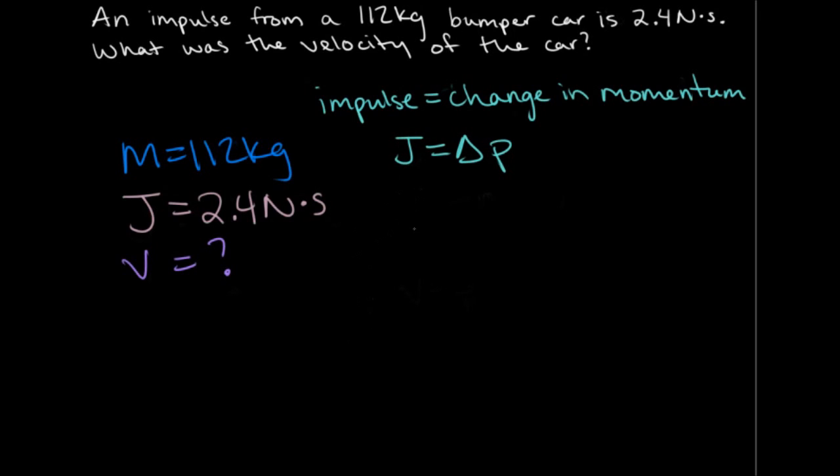And then after that, I'm going to rewrite it as impulse equals mass times velocity, because the change in momentum, or delta P, equals mass times velocity. So all I did was sub that in for P.